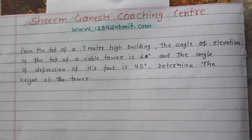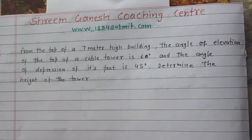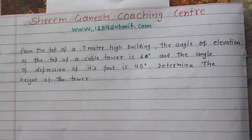In this question we are given a 7 meter high building and a tower. The height of the tower is not given. The angle of elevation from the top of the building to the top of the tower is 60 degrees, and the angle of depression from the top of the building to the foot of the tower is 45 degrees. We are to find the height of the tower.